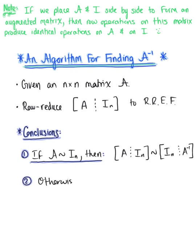Otherwise, matrix A is non-invertible — in other words, the inverse of matrix A does not exist. In case two, matrix A is non-invertible if we don't end up with the n-by-n identity matrix on the left-hand side.